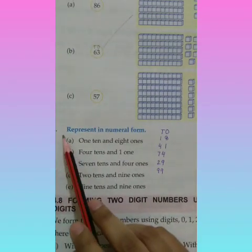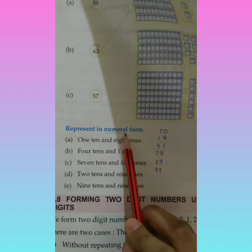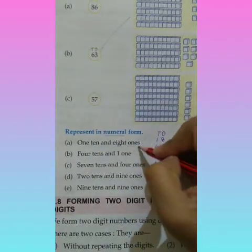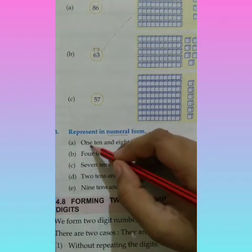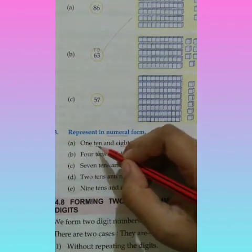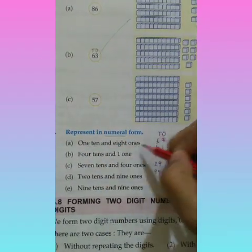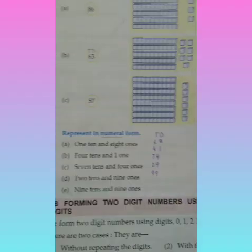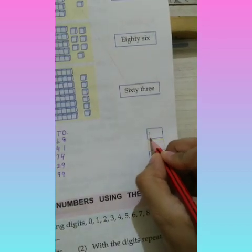Then, in question number 3, what do we have to do? Represent in numeral form. 1 ten and 8 ones. So, if we are going to write it under tens and ones. We have 1 ten and 8 ones. 1 ten, 8 ones. That means, the number is 18.